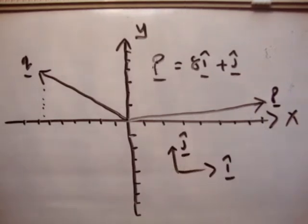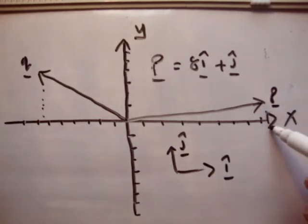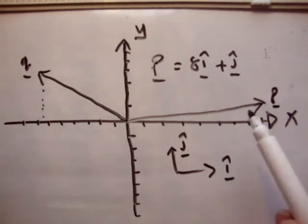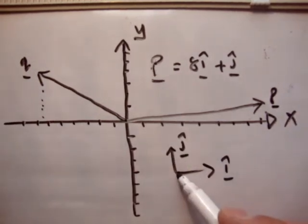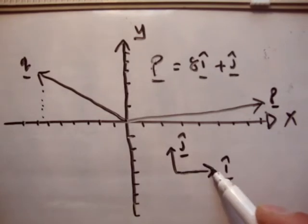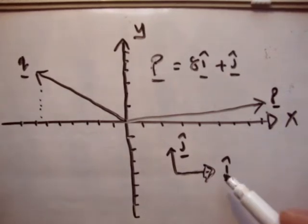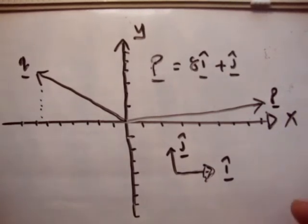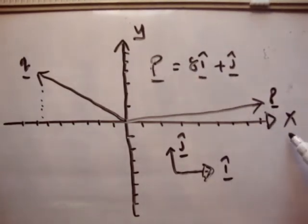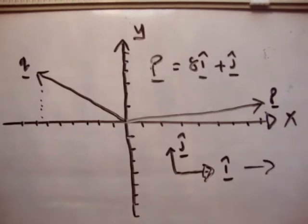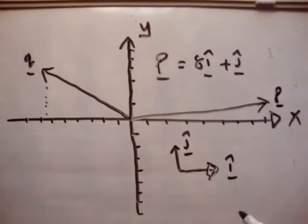Remember the difference between unit vectors and the axes. The x-axis is along here, and we use the î hat vector to say that something is in the x-axis direction. So the 8î means 8 units in the positive x-axis, or in the positive î direction, because this direction here is positive for the î hat vector.